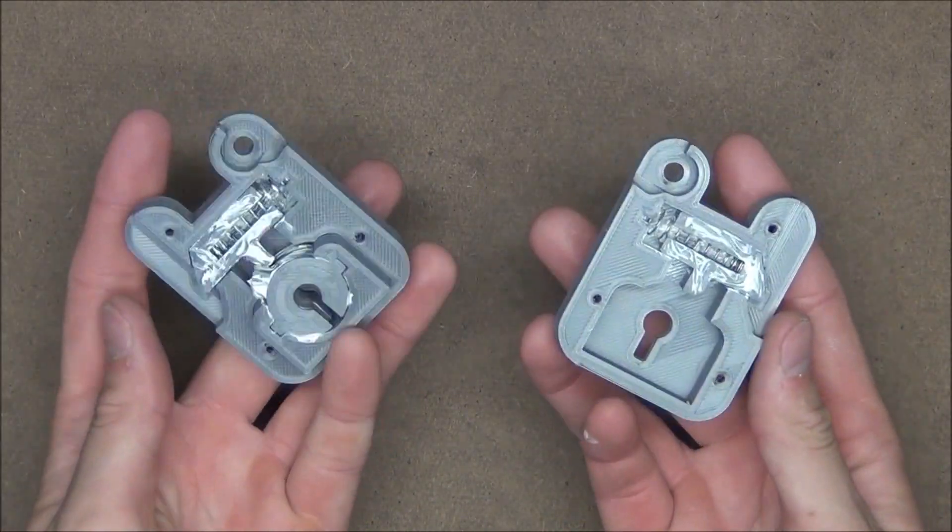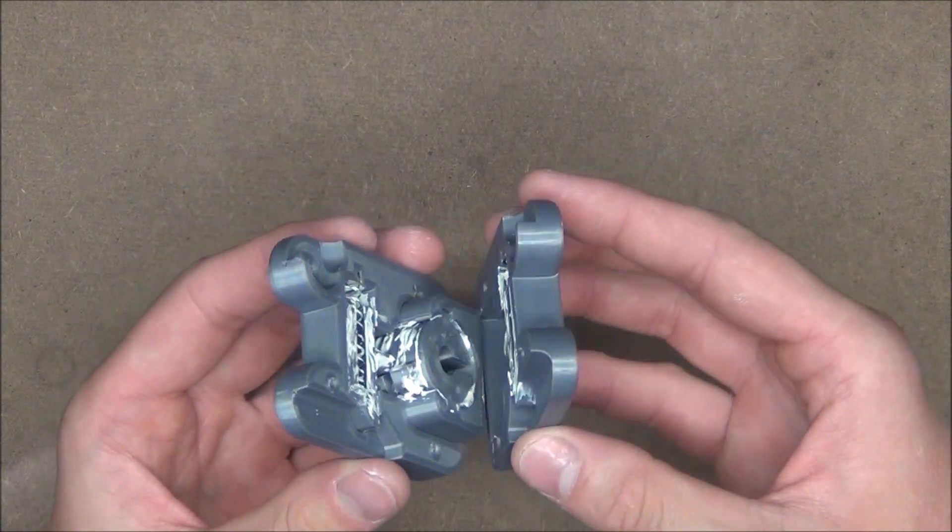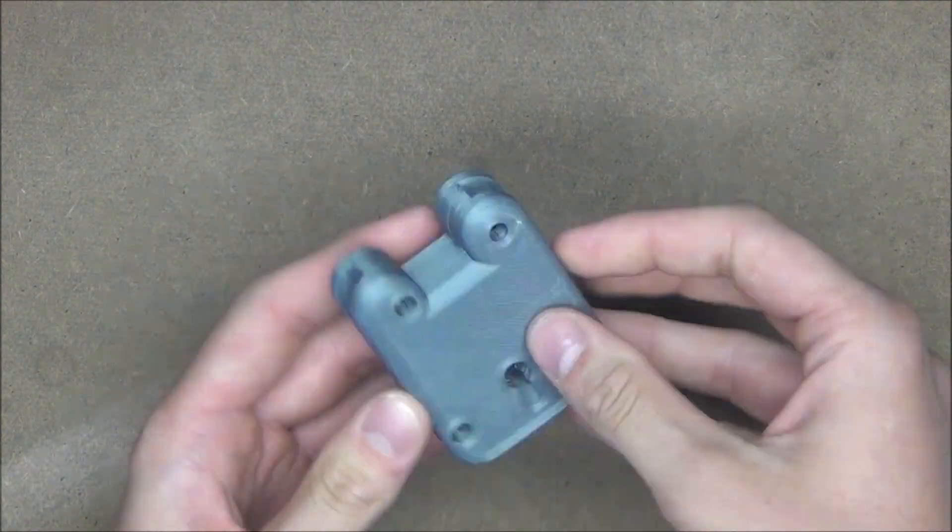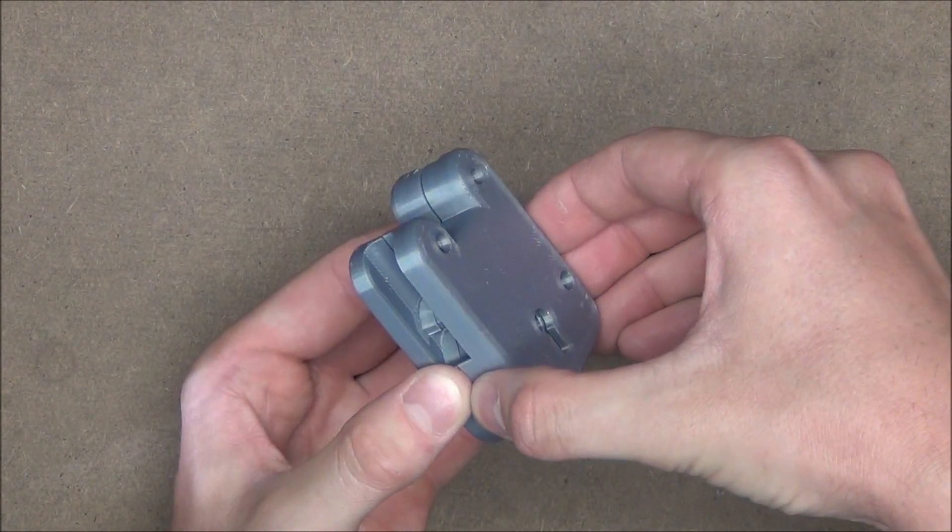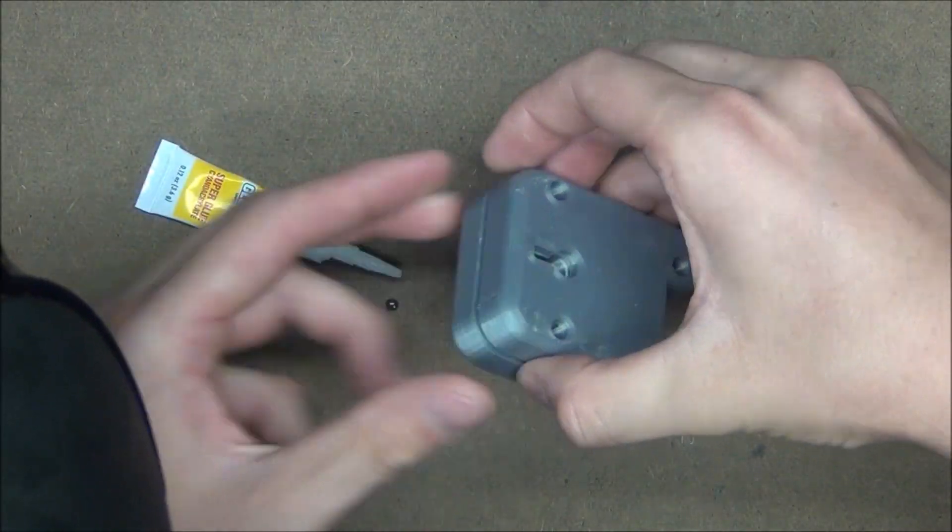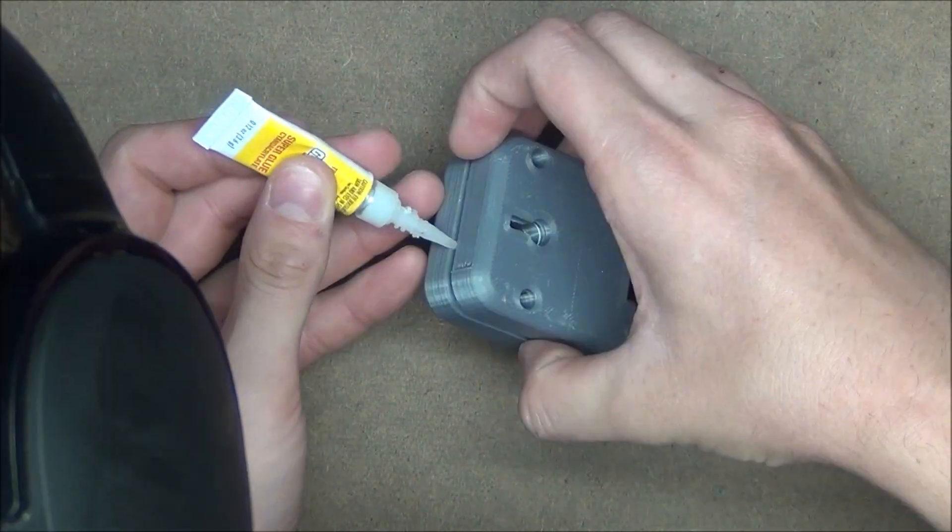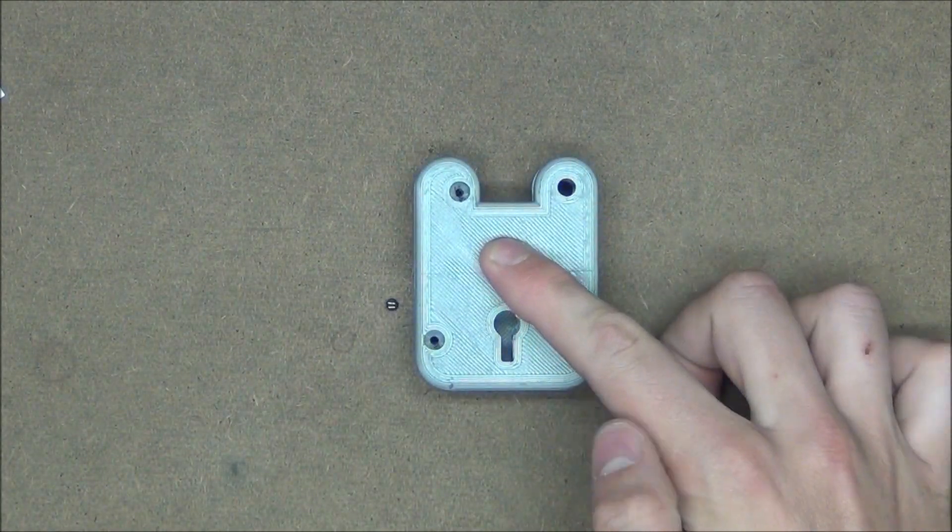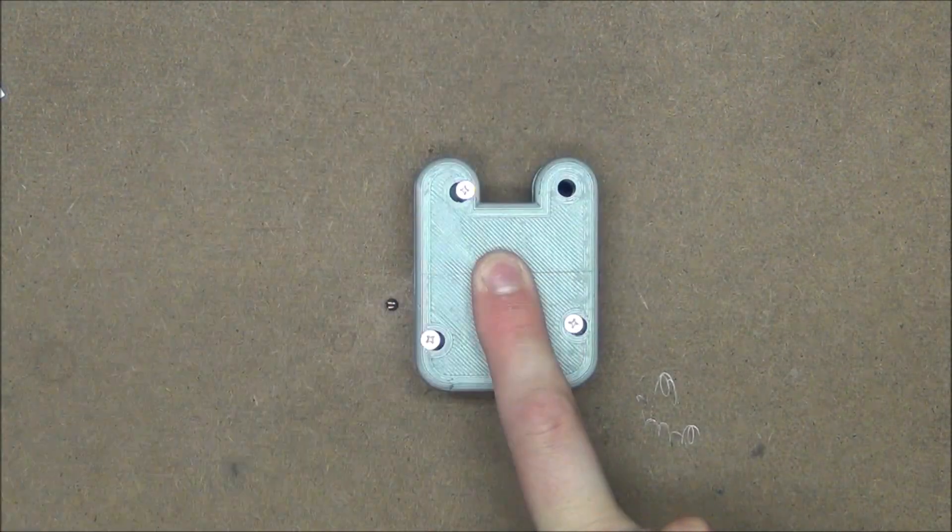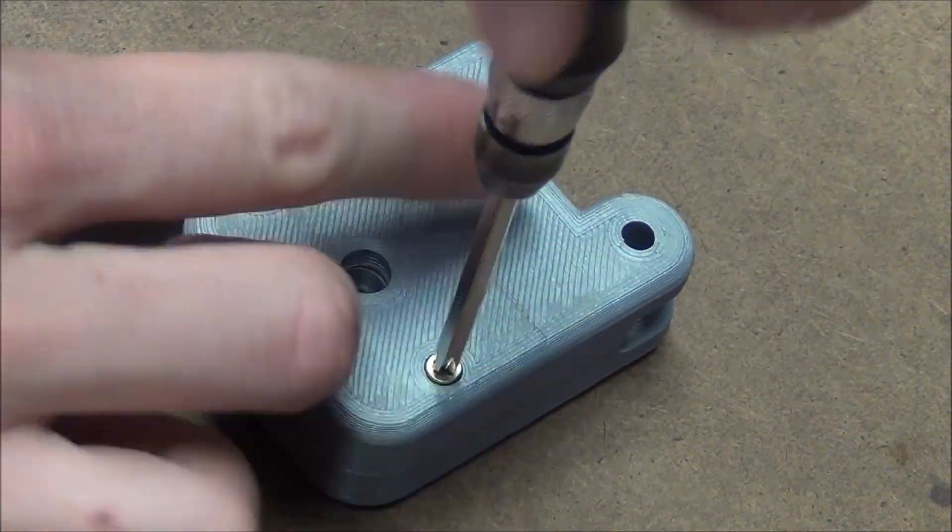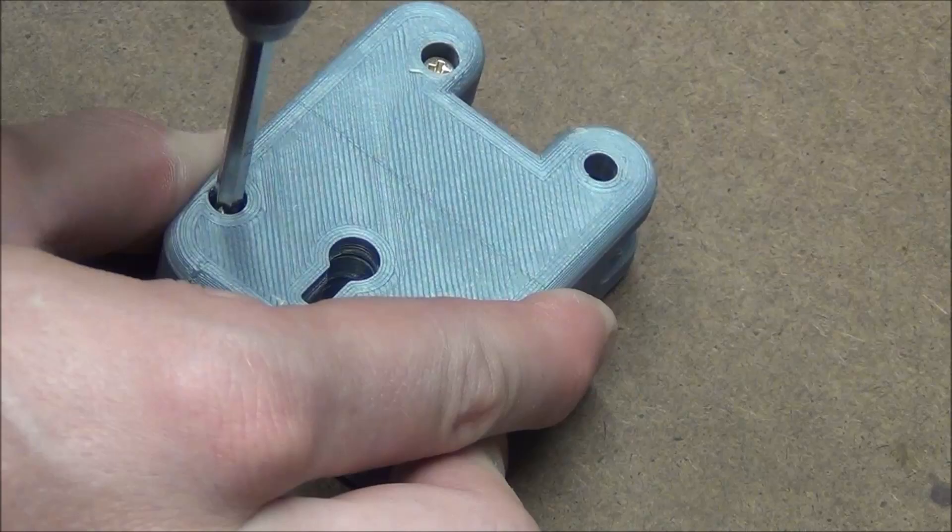Once everything's in place and we're happy with how well it's greased, we can go ahead and snap both halves together. Looks like it's lining up really well. So I'm going to go ahead and open it back up just a touch so I can super glue it together. Just be super careful not to glue any of the internal moving parts, because the grease cannot help against that. Once the glue has had time to set, I'm going to go ahead and drop in these tiny screws and tighten them down. Between the screws and the glue, we should have a pretty solid seal that's not easily broken.